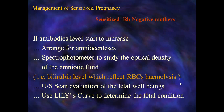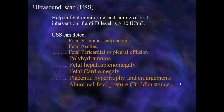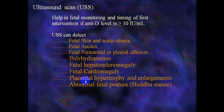Ultrasound evaluation of fetal well-being is performed, and the Liley chart curve is used to determine the fetal condition based on zones 1, 2, and 3, and the optical density of bilirubin shown in the slide. Ultrasound findings help in fetal monitoring and timing of the first intervention. If the anti-D level is more than 10 international units per milliliter, intervention is indicated.